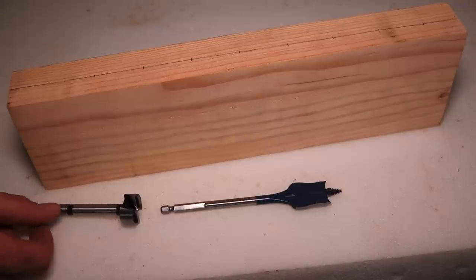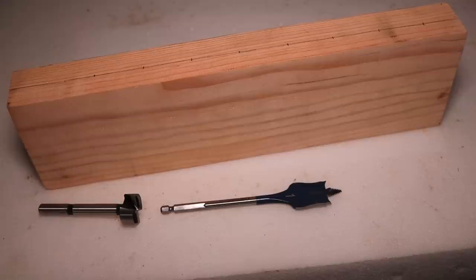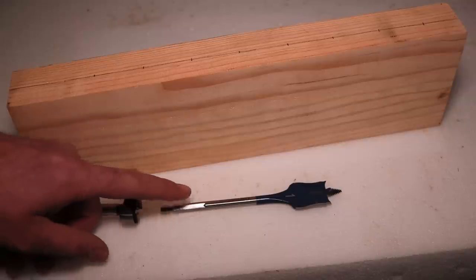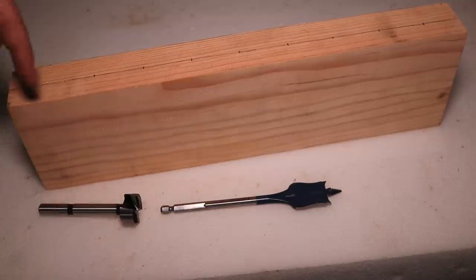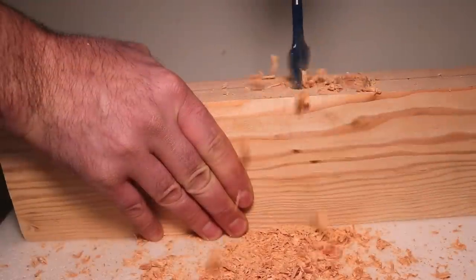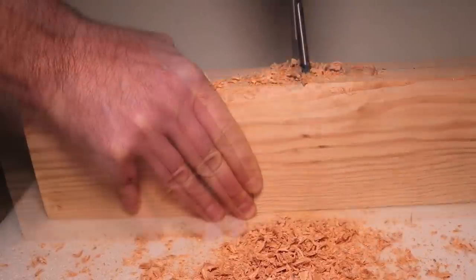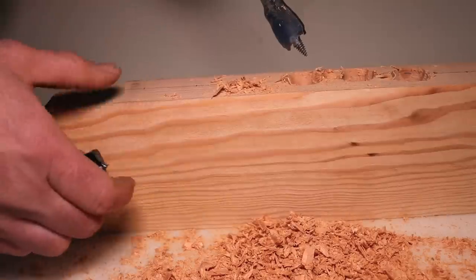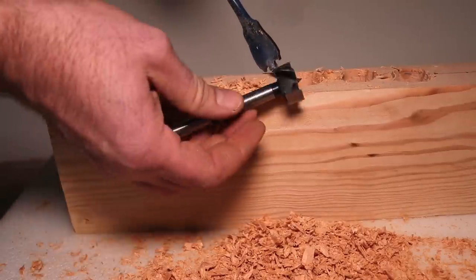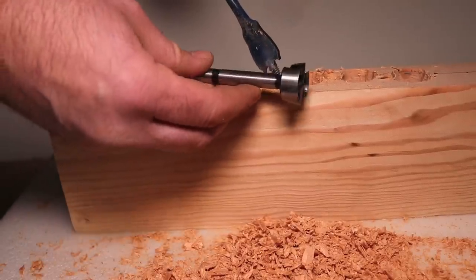My favorite is a Forstner bit on a drill press. It cuts really clean and flush. If you don't have these you can also use a one inch spade bit on a cordless drill. I'll show you the difference now so let's start drilling. This will work but it's nothing compared to a Forstner bit. Let's go put this on the drill press and finish the job.